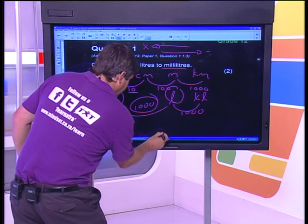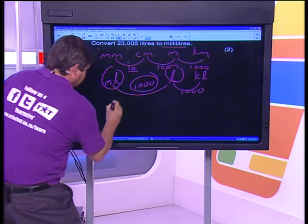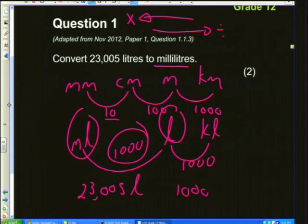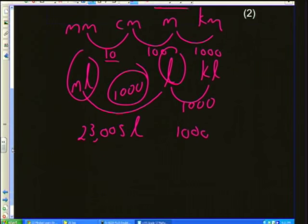So let's go through this question. We have 23,005 liters and we want to convert to milliliters. We know the jump is 1,000. We're going from liters to milliliters - that's going in the direction of smaller units - so we're going to multiply. We're going to multiply 23.005 by 1,000. My calculator gives me 23,005 milliliters.